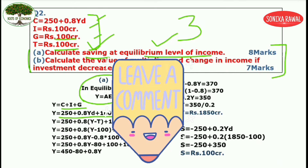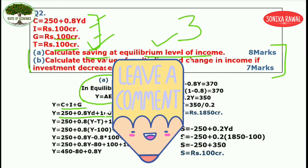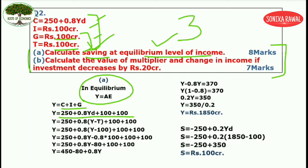Tell me in the comment section: if our government expenditure and taxes are equal, our budget is equal to what?